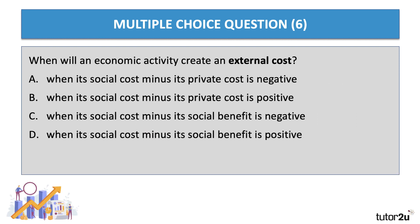Question six: when will an economic activity create an external cost? The correct answer is B — when the social cost minus the private cost is positive. In other words, there is an external cost that you have to add on to the private cost to get the social cost.